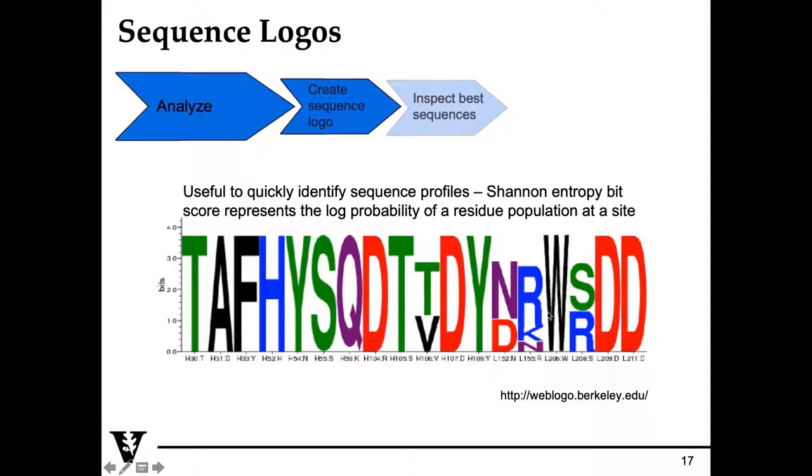You can either use the web logo website to upload your sequences or you can use the script we've provided to generate your own web logos. Essentially, what this does is it gives you the Shannon entropy bit score. Basically, how likely is that position going to be fixed in sequence?